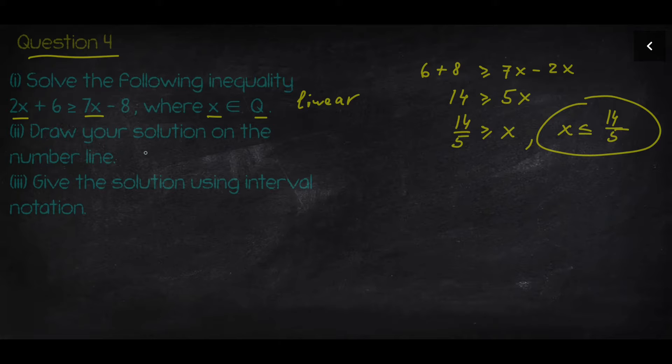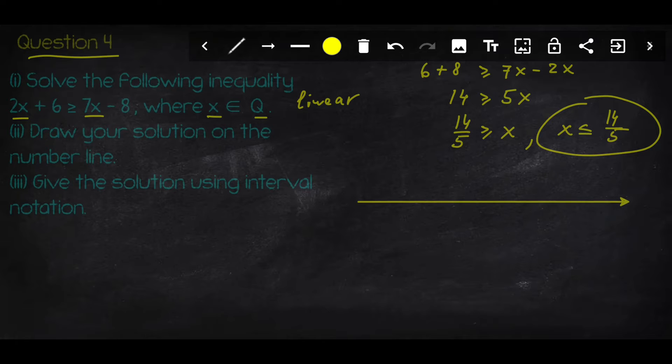Okay, so what we need to do, we need to draw a solution on the number line. So that's what I'm going to do right now. I'm going to use that, let it be the number line. I put 14 over 5 as the point that I fill it up. It's a filled in point, 14 over 5.